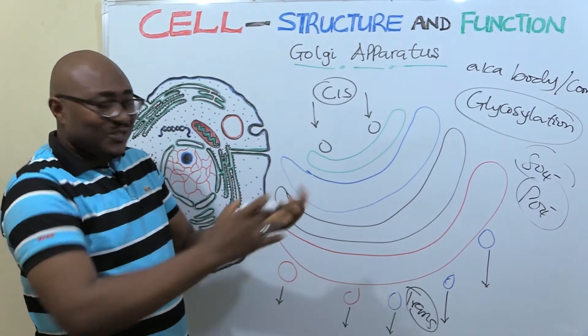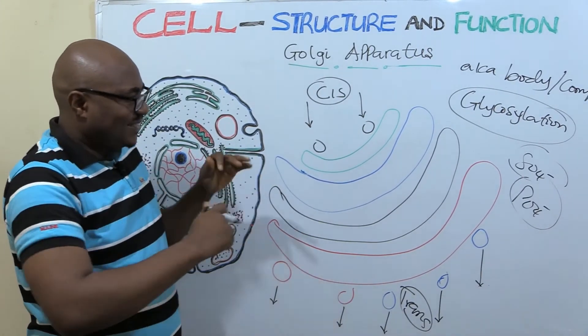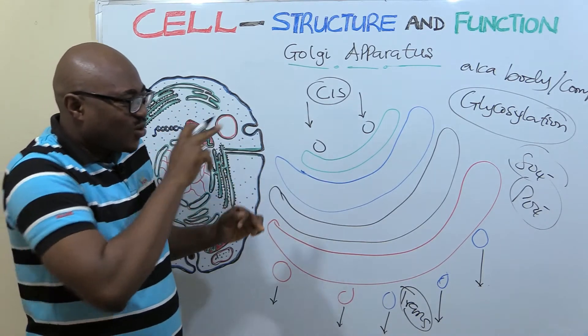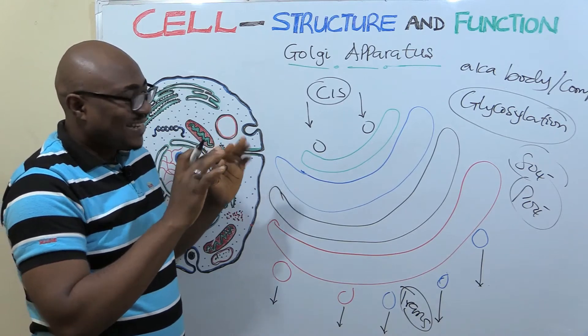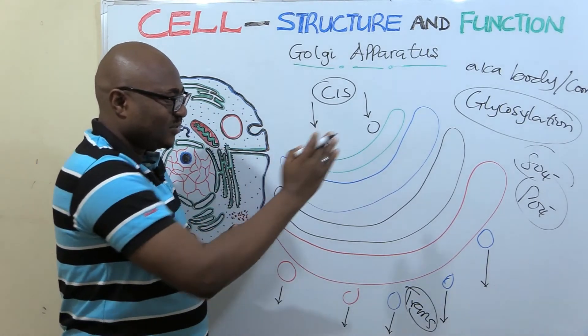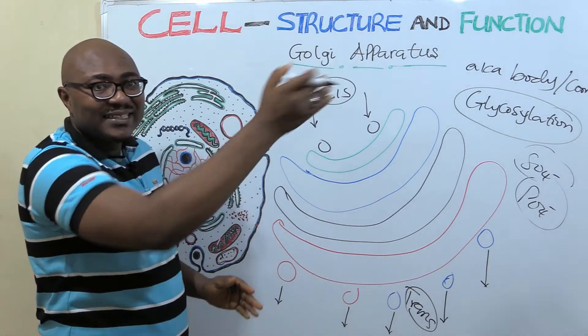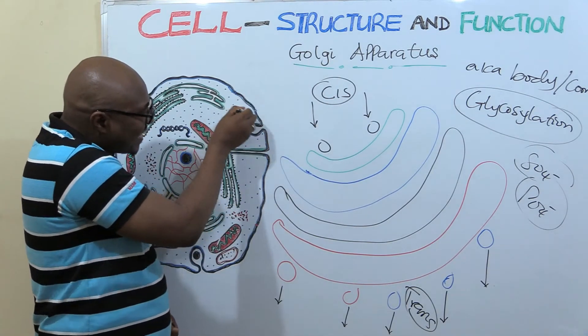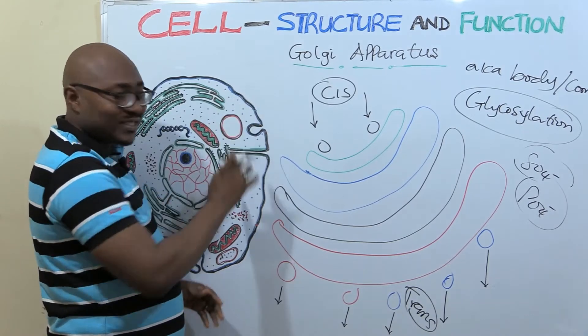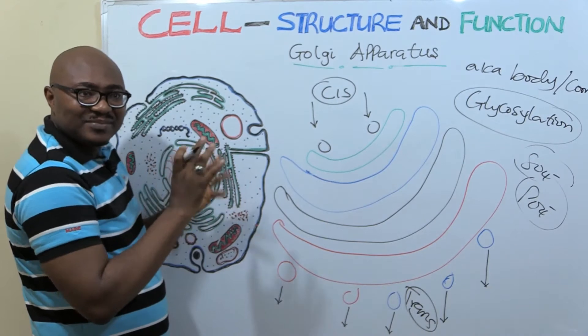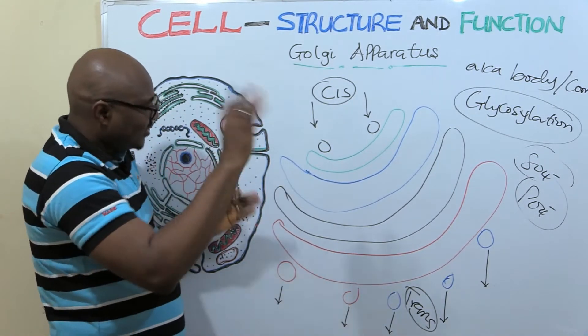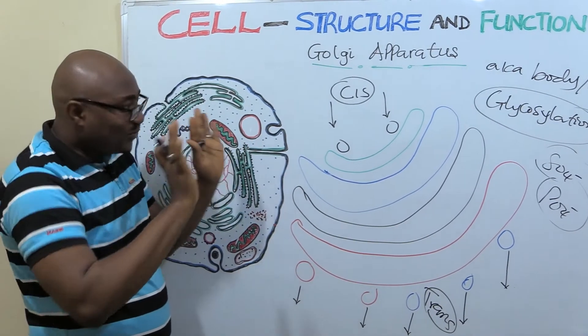So it just modifies and embellishes it to the final product. And then it distributes. So it modifies, it processes, it packages, labels. That means it puts some signaling molecules around it to identify it so that it can go to the right place in the cell. If you want it to go to this side, it goes to this side. If you want it to go outside, it goes outside the cell. If you want it to be embedded in the cell membrane, it goes there.